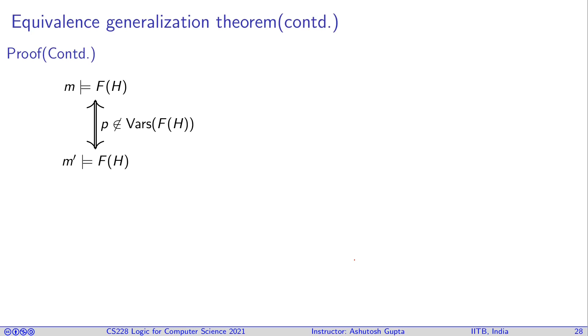Now we're going to use this fact to prove our theorem. Assume m satisfies F(H). Since p does not occur in this formula—why? Because F had p but it's being replaced by H, so all the p's are gone and H doesn't have p—p does not occur. We changed from m to m' by changing the value of p, so m and m' still have the same satisfaction state with respect to F(H). Therefore, m' satisfies F(H).